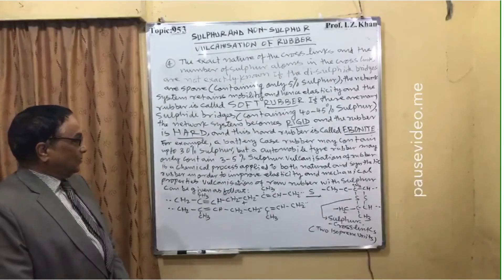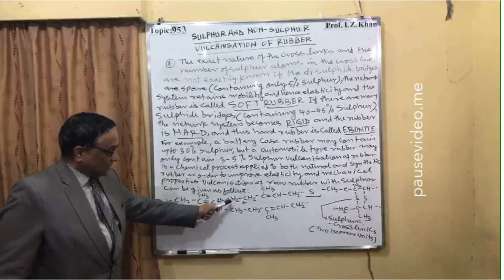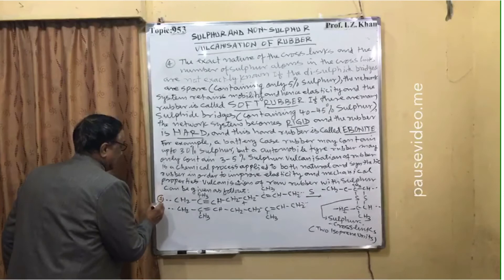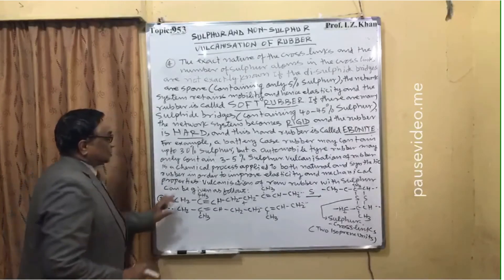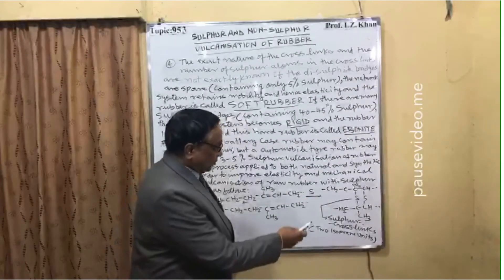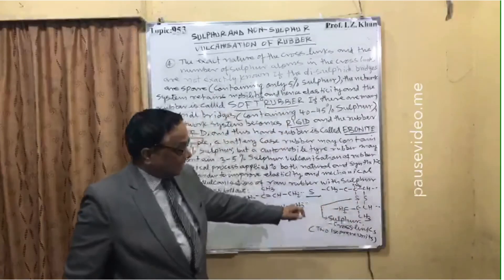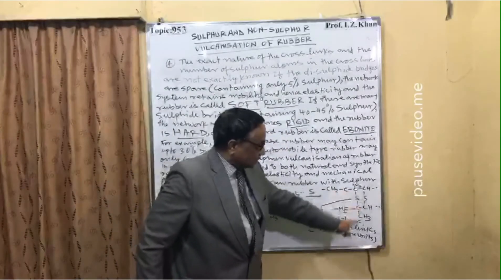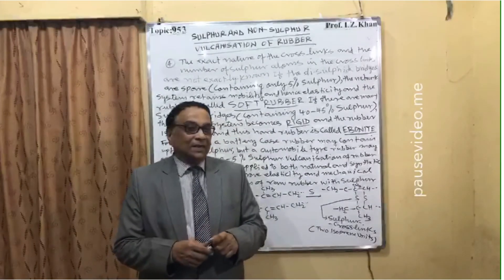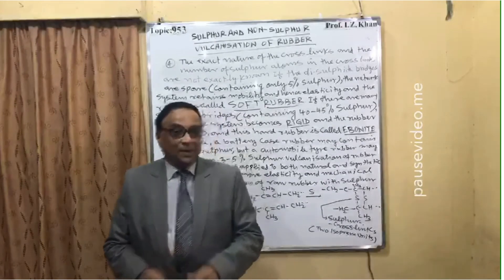The vulcanization of rubber with sulphur can be illustrated as follows: suppose there are two isoprene units. In the presence of sulphur, vulcanization takes place and a cross-link of sulphur forms between two carbon atoms of the isoprene units. This cross-linkage of sulphur in rubber improves the mechanical, elastic, and toughness properties of the rubber.